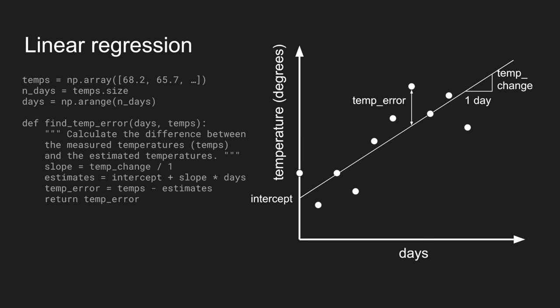And then the measured temperature on any given day, temps, will be off from that by temp error, have a difference of temp error. So this is how we can calculate the deviation of our measured points from our line.